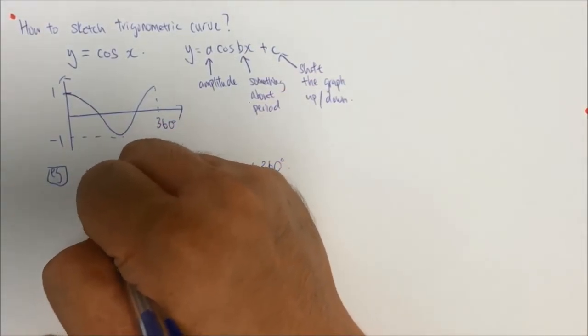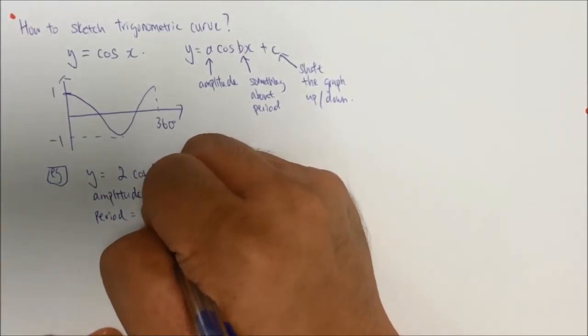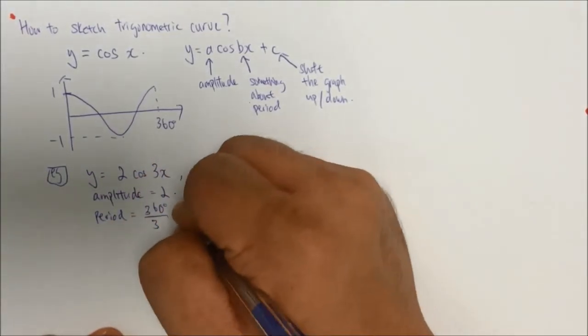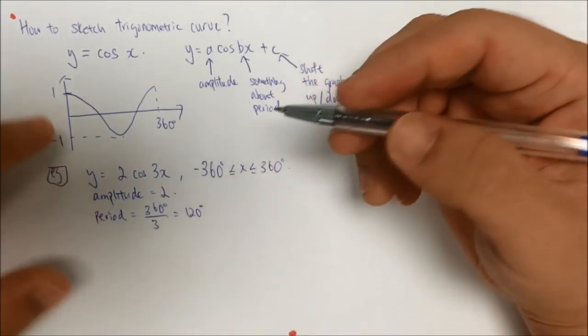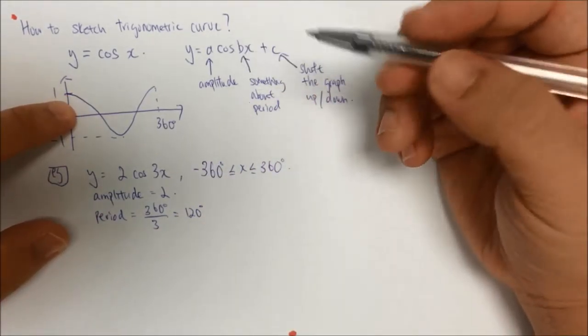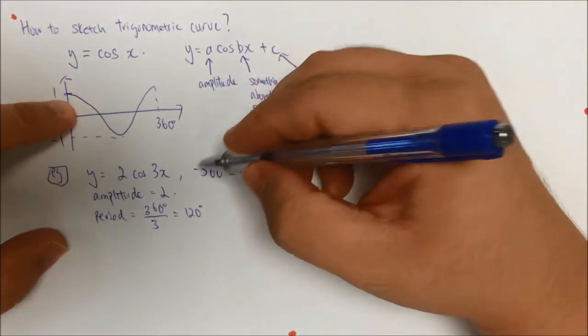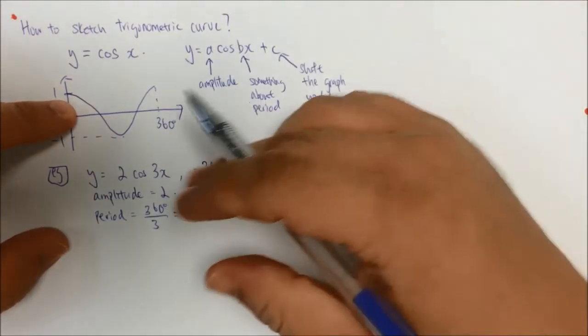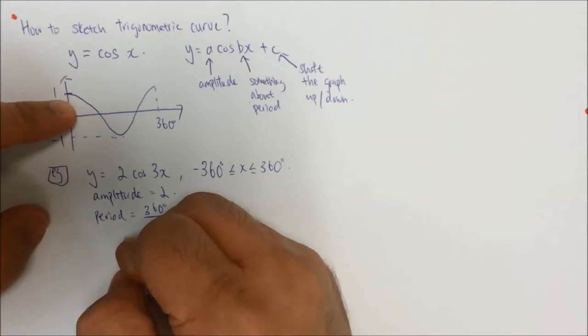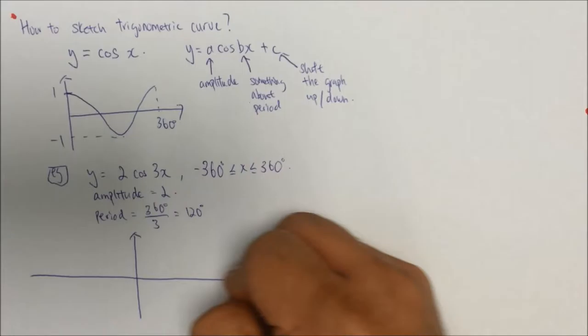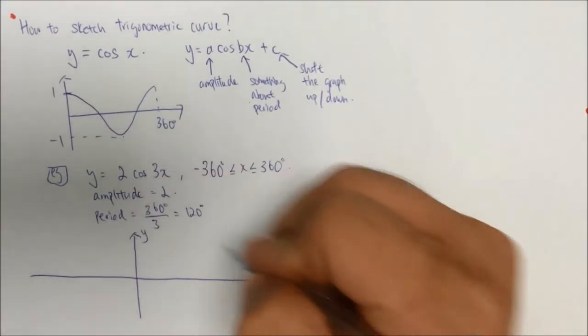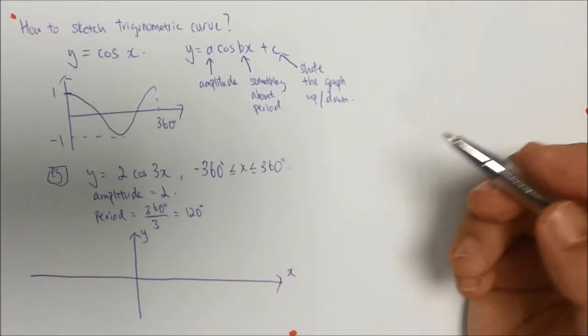And my period in this case will be 360 degrees divided by 3, which is 120 degrees. So for every 120 degrees I have to have one complete cycle of my cosine curve. So from negative 360 to 360, it's going to be a huge range, so you must be prepared. You draw your y-axis in the middle and you draw your x-axis on both sides.